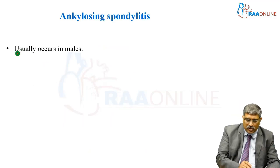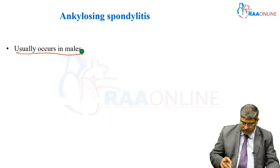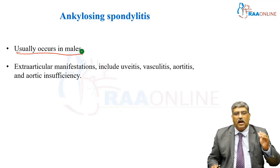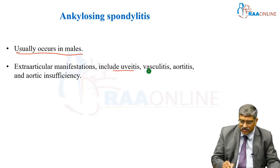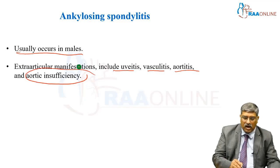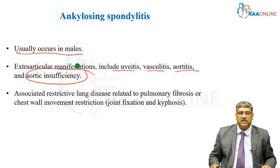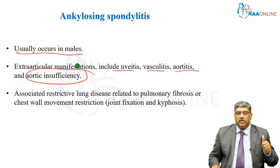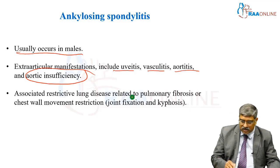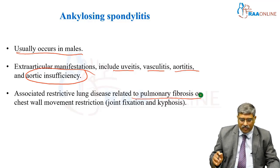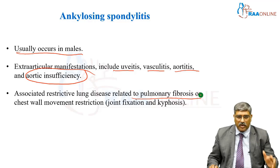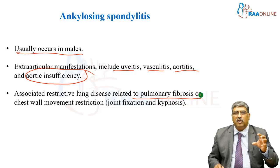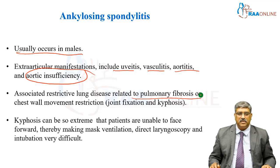Ankylosing spondylitis usually occurs in males. Extraarticular manifestations include uveitis, vasculitis, aortitis, and aortic insufficiency. There is also associated restrictive lung disease related to pulmonary fibrosis or chest wall movement restriction, and there may be joint fixation and kyphosis.